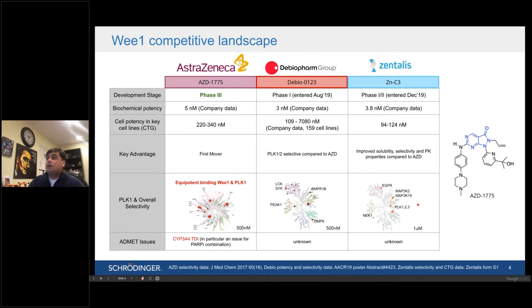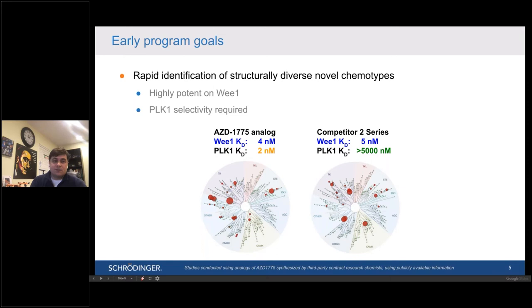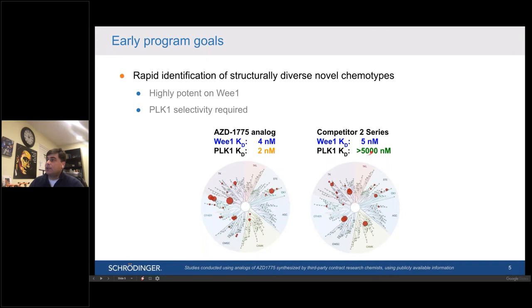When we started the project, we knew we were a bit behind AZD1775, which was already in clinical trials, so we set up very ambitious goals at the early onset of the program. We needed rapid identification of structurally diverse novel chemotypes, with high requirement for on-target potency on WEE1. As I mentioned, our differentiation strategy required PLK1 selectivity from the get-go. We established a screening funnel to meet this criteria in silico prior to progression of compounds into the synthesis queue. This is internal data we generated for two analogues of each series, highlighting the equipotent binding for competitor compounds versus compounds that are clean on PLK1.